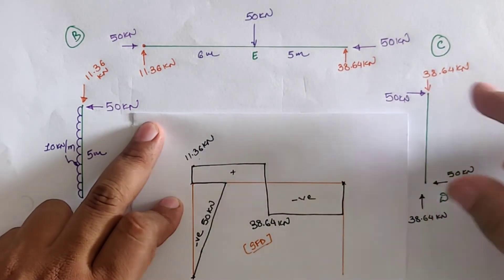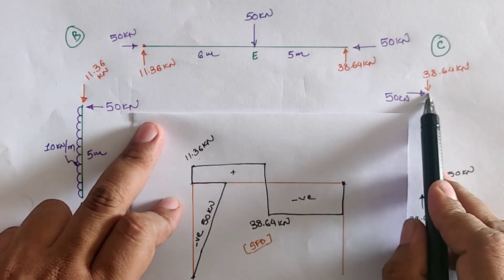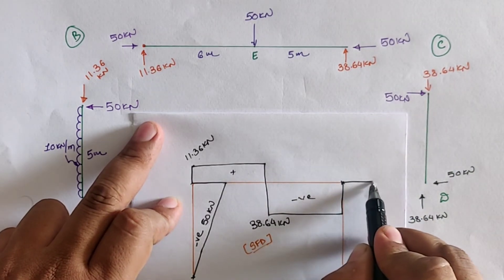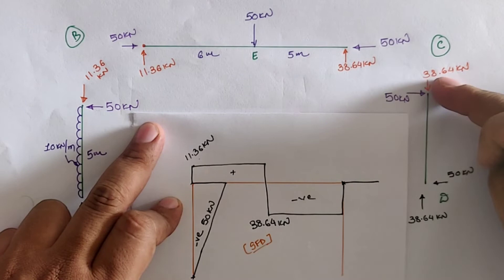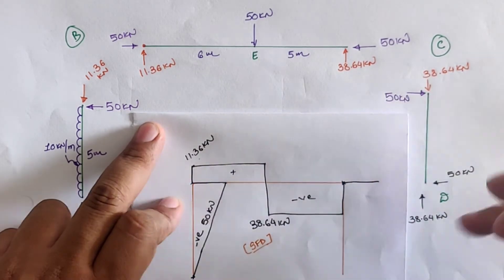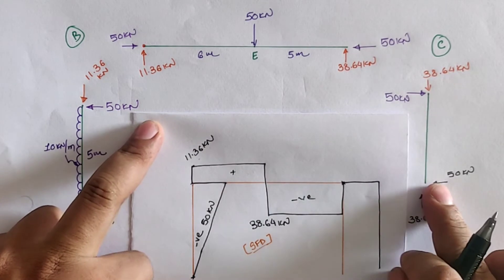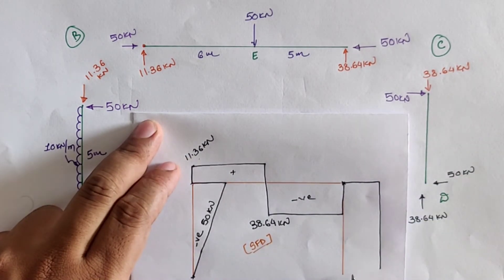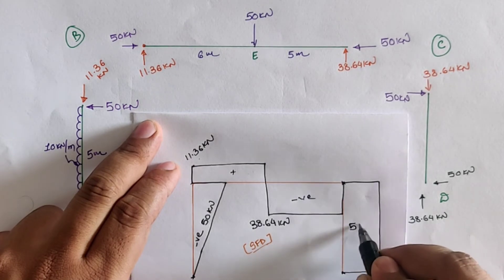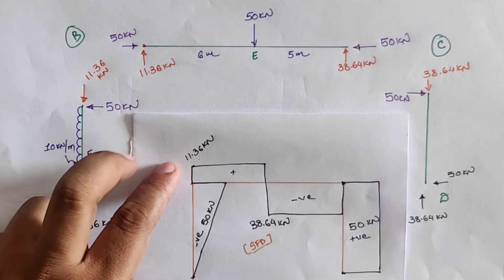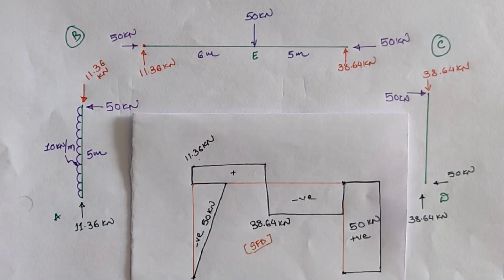For member CD: there is a 50 kN load acting upward at C, so we plot +50 kN. From C to D there is no point load, so the diagram is a horizontal straight line. At D, the 50 kN downward load brings the value to zero. The shear force in CD is 50 kN in the positive direction.